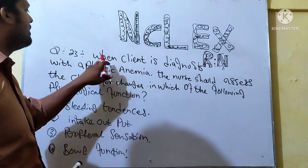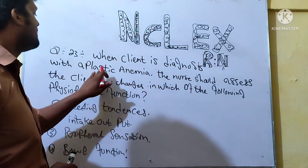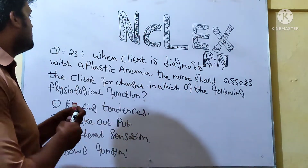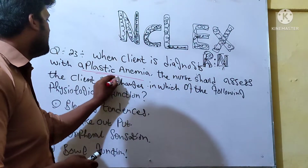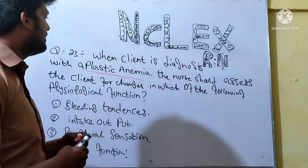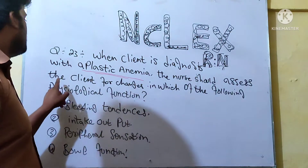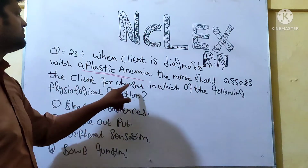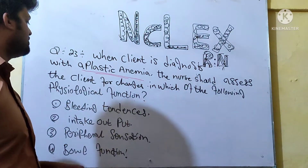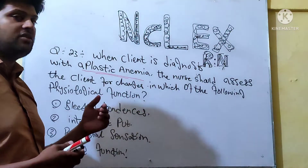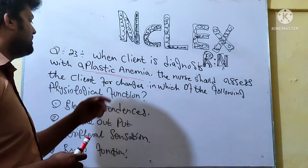Question number 23. When a client is diagnosed with Aplastic Anemia, which is a hematological disorder, the nurse should assess the client for changes in which of the following physiological functions? What types of physiological functions are affected in Aplastic Anemia?